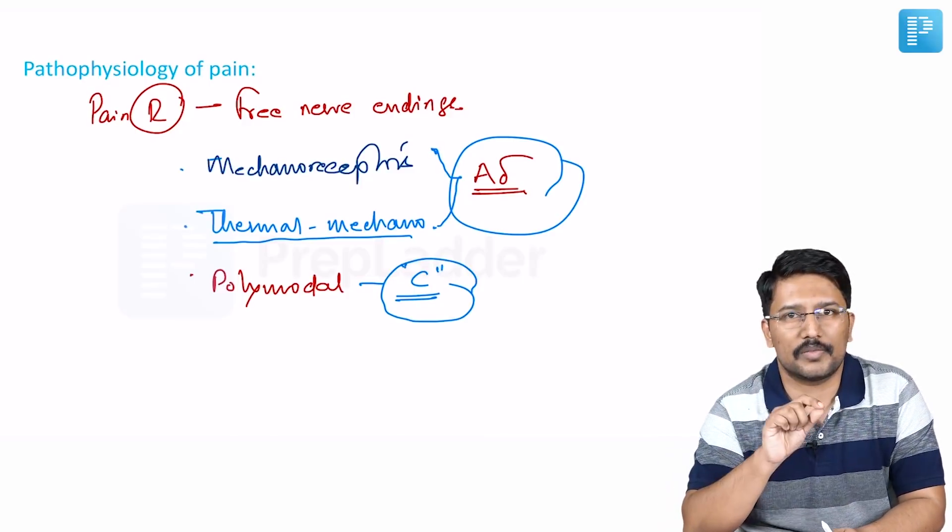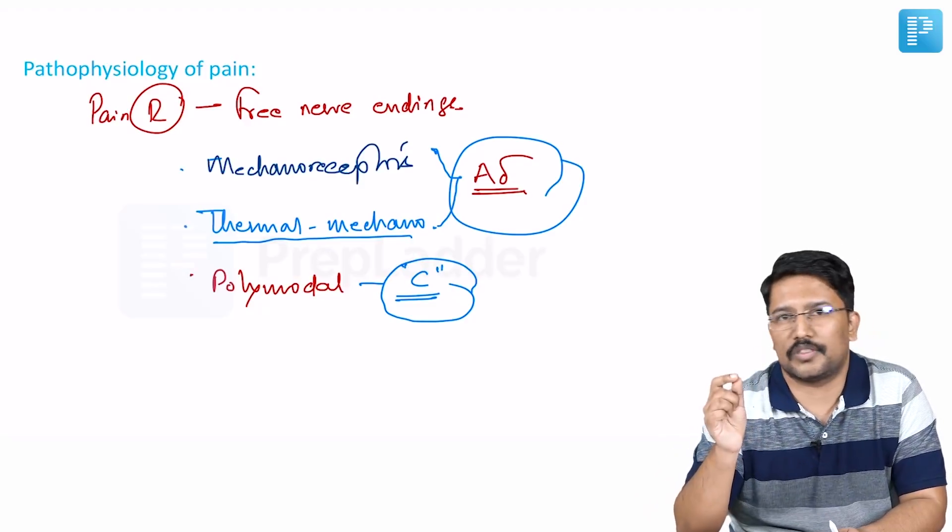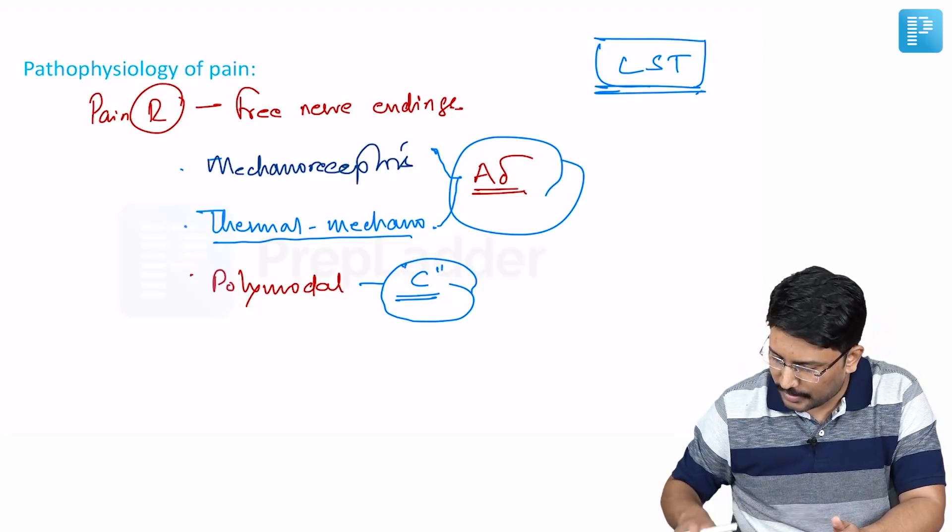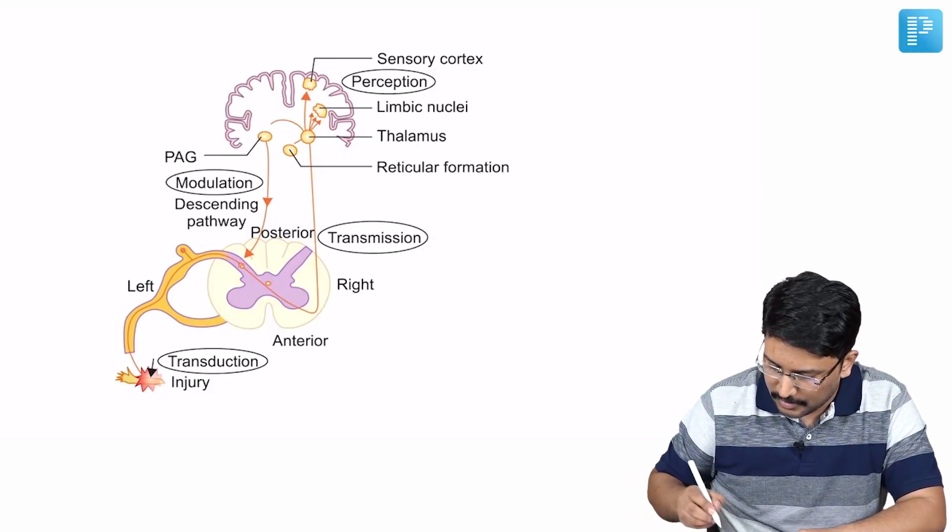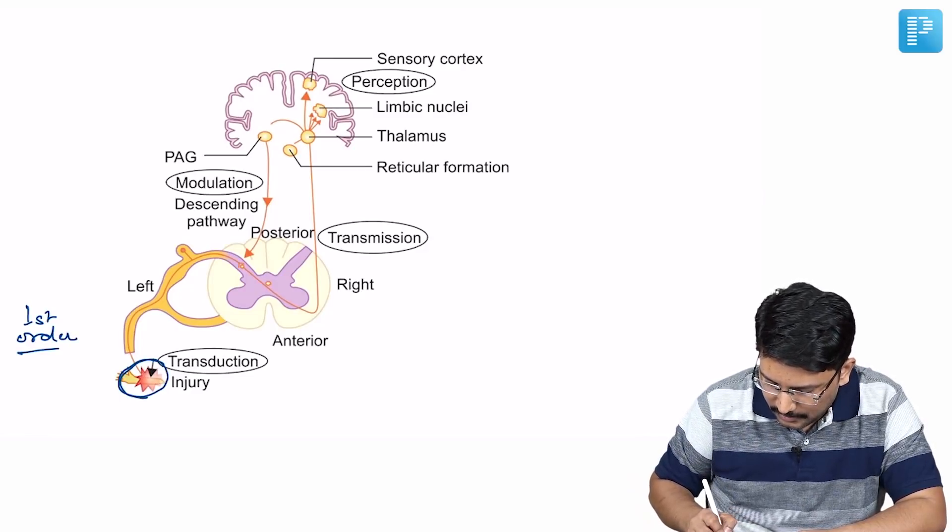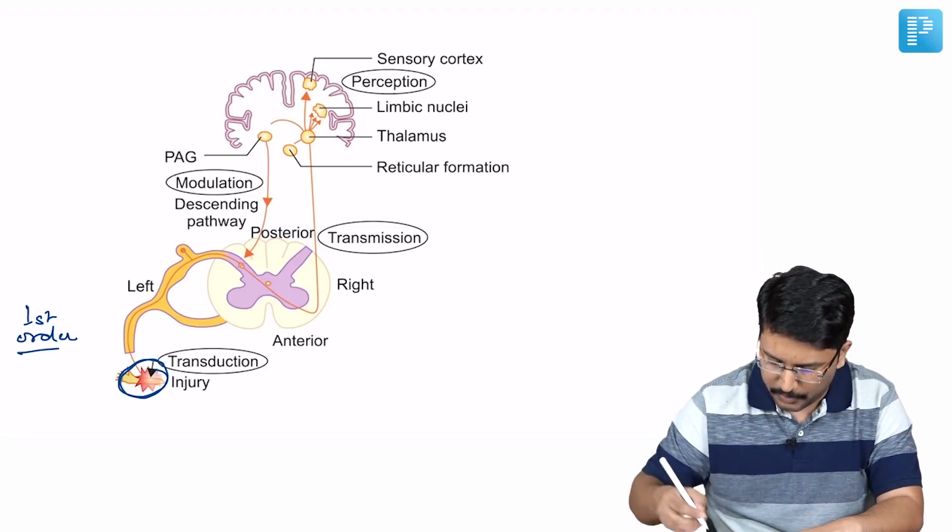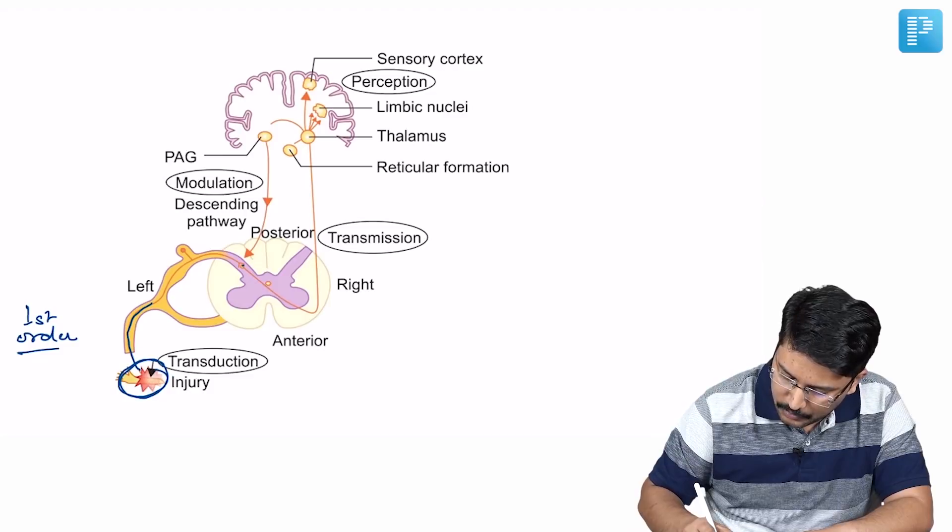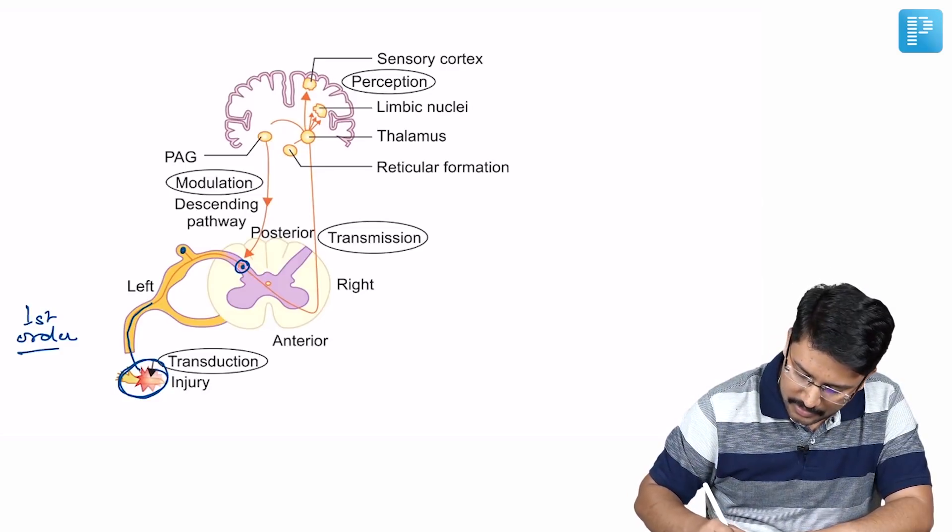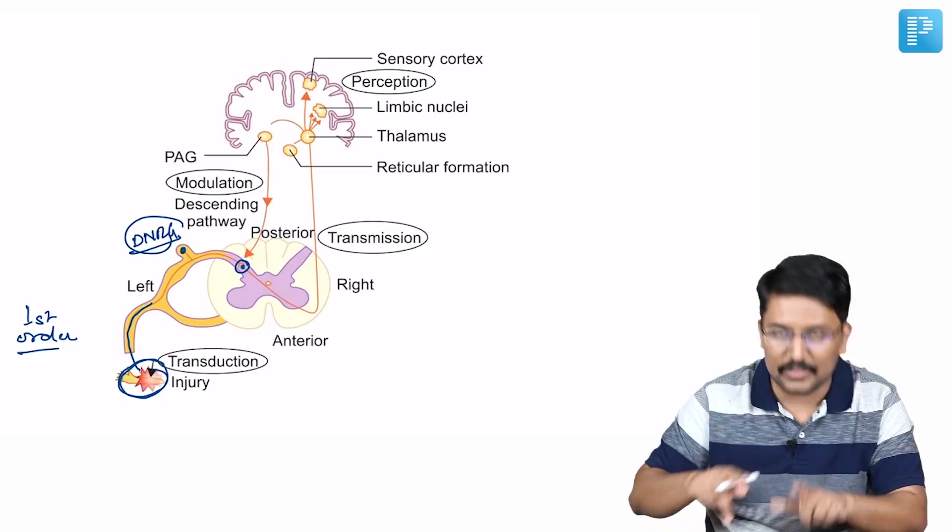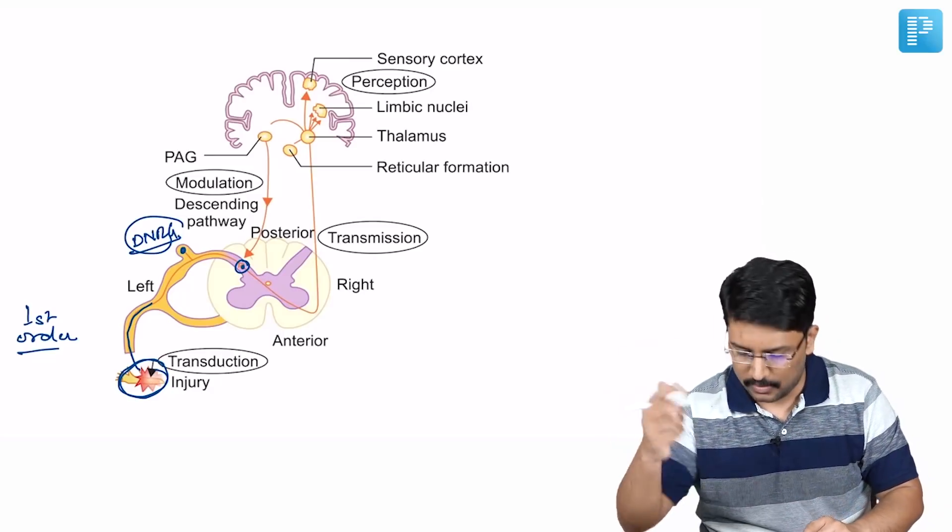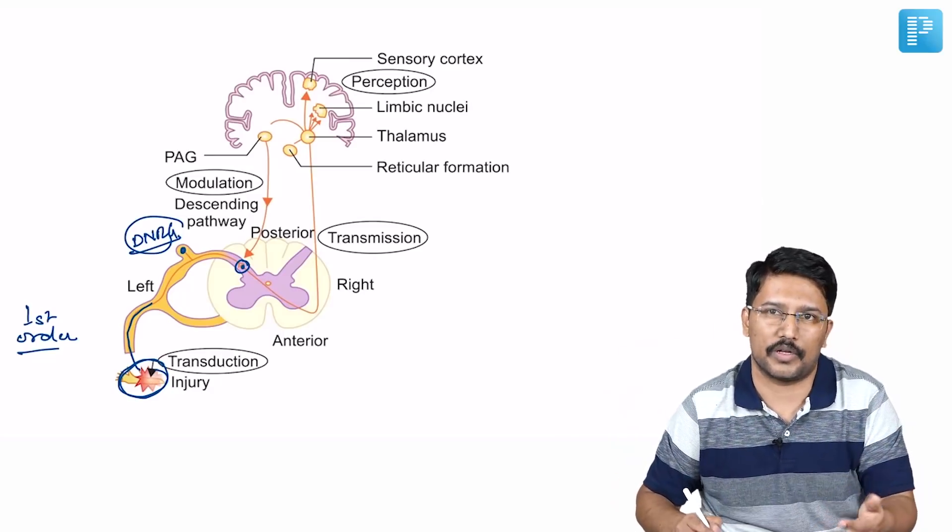From the receptor, the pain has to travel through a pathway to reach the brain, and that pathway is basically lateral spinothalamic tract. The lateral spinothalamic tract begins with first order neurons, which supply the somatic tissue or the affected part of the body. From there, the first order neuron travels up to synapse formation on the posterior horn of the spinal cord. The cell bodies of these first order neurons stay in the dorsal nerve root ganglion.